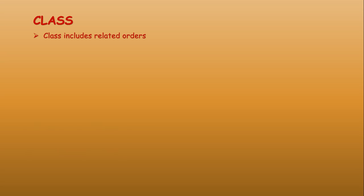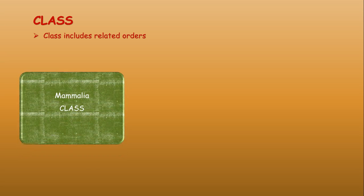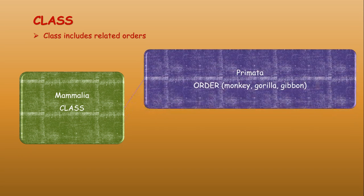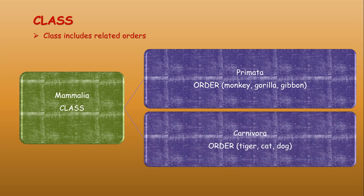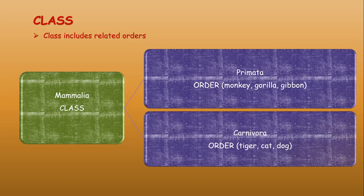Class includes related orders. An example is the Mammalia class, which includes the Primata order and the Carnivora order. Monkeys, gorillas, and gibbons come under the Primata order, whereas tigers, cats, and dogs come under the Carnivora order, but all six of these come under the single class Mammalia.